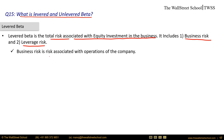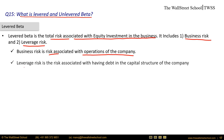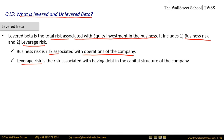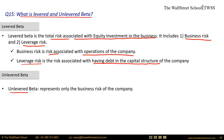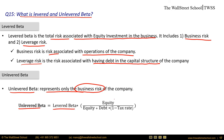Business risk is the risk associated with the operations and the kind of business the company is in. Leverage risk is the risk associated with having debt in the capital structure — more debt means more leverage risk. Unlevered beta represents only the business risk of the company. The formula for unlevered beta is: levered beta × equity / (equity + debt net of tax impact).